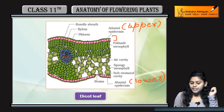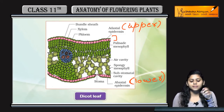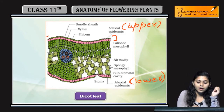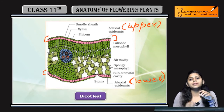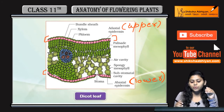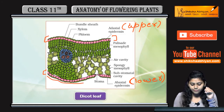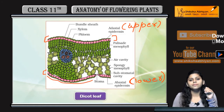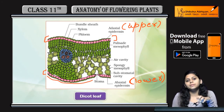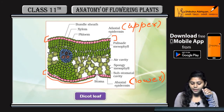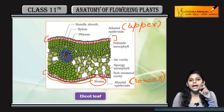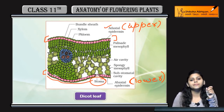अब adaxial और abaxial surface में epidermal layer होगी। ये epidermal layer surround होगी by cuticle। जो lower epidermis है, उसमें stomata ज्यादा present होंगे as compared to adaxial epidermis.